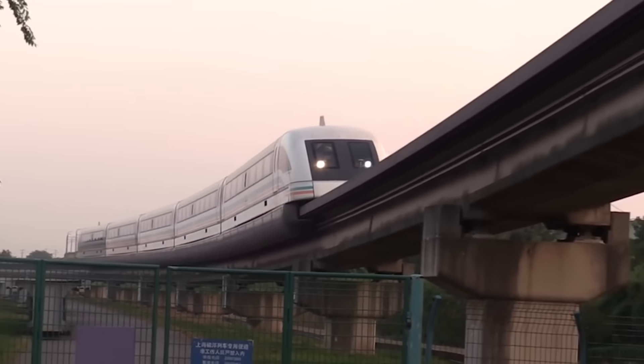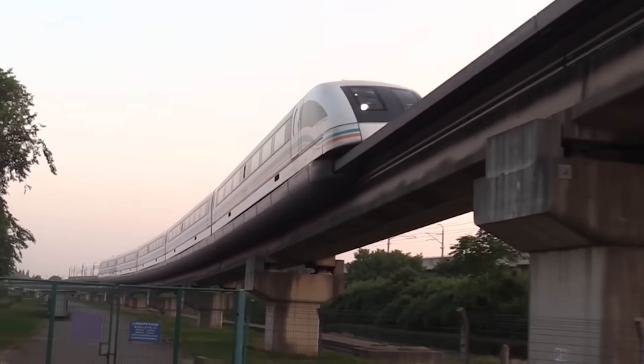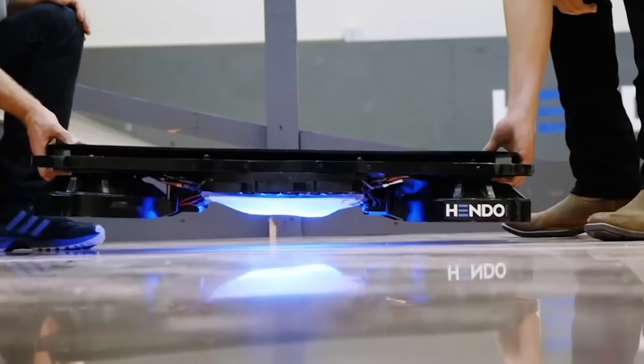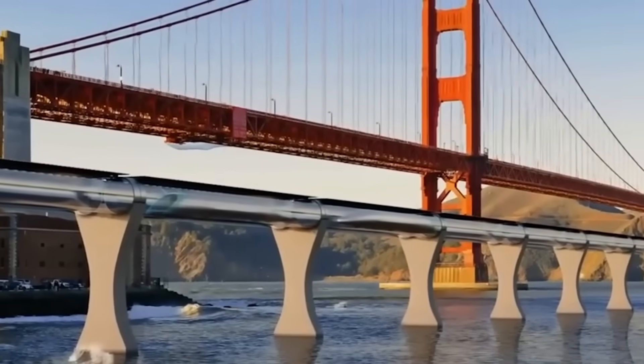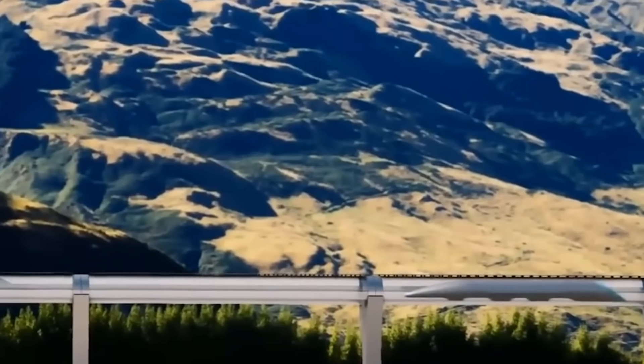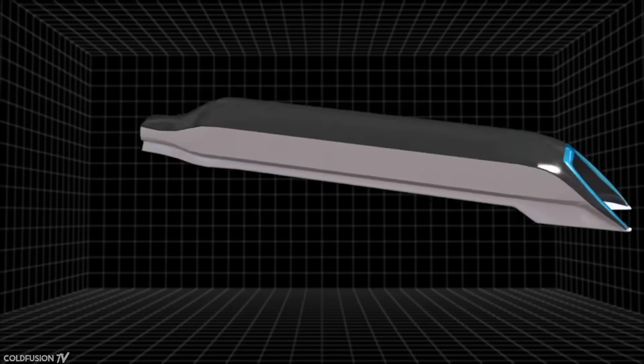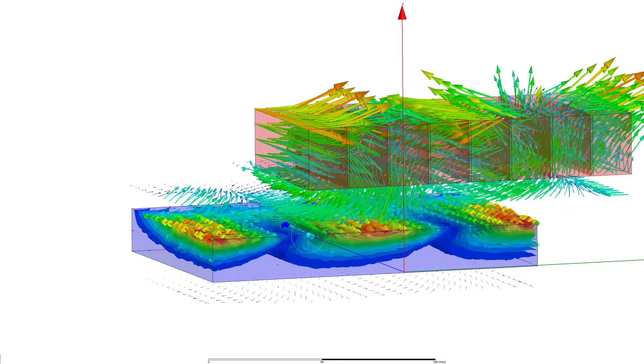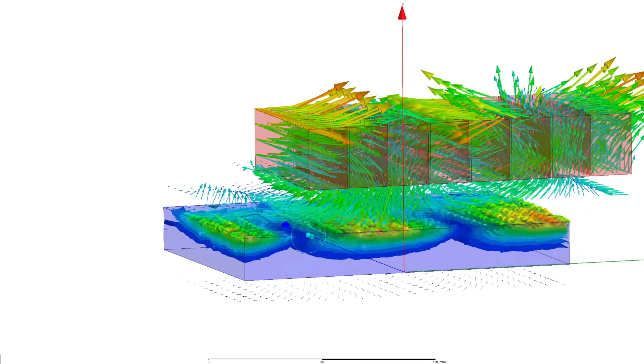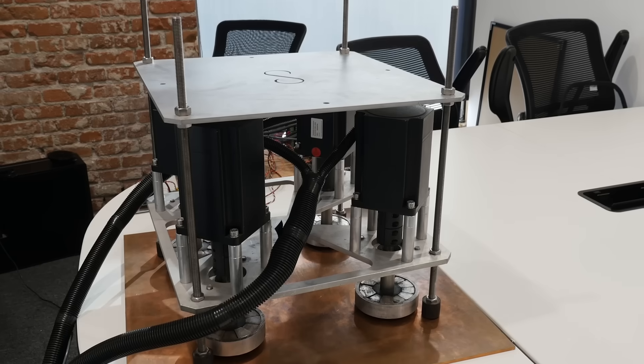This principle has been used to achieve levitation in everything from maglev trains to hoverboards. And it's being considered as a means to make the Hyperloop, a super fast system for transporting people and goods through tubes at very low pressure. But instead of spinning the magnets, the vehicle's motion itself would cause the magnetic field to change in the conductive track below. So in the future, do you think this is going to be how we travel?